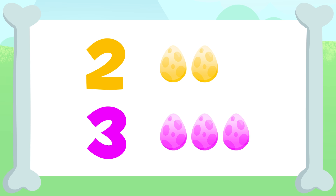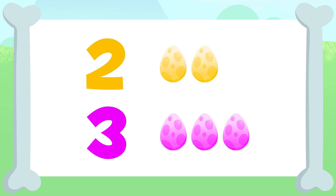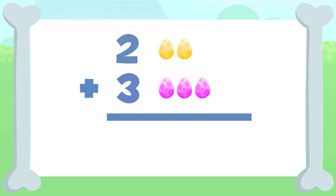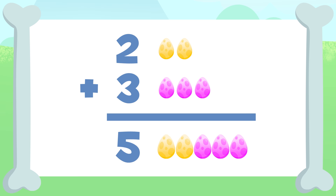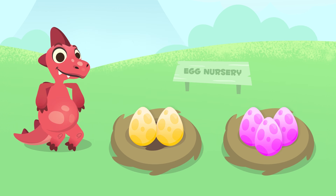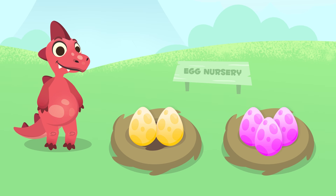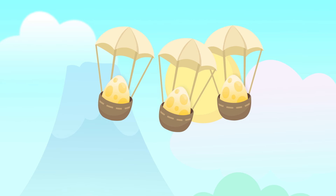Down there we have one, two, and three eggs. We have to add two plus three. So all the eggs together would sum up: one, two, three, four, and five. We have five eggs. Two plus three equals five. Well done Dino, do you like adding up?